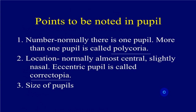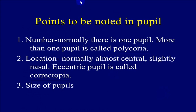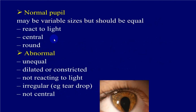Normally there is only one pupil; very rarely more than one, which we call polycoria. Location is usually central; if peripheral, it is called eccentric or corectopia. Pupil size can be normal or abnormal — abnormal can be miotic or mydriatic. A normal pupil is central, round, and reacts to light. An abnormal pupil is unequal, dilated or constricted, not reacting to light, irregular in shape, or not central.